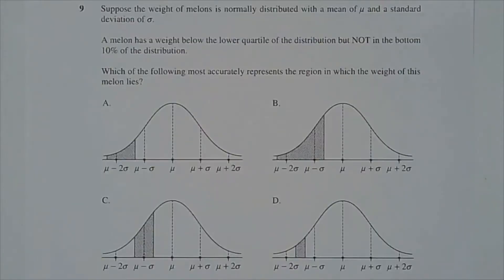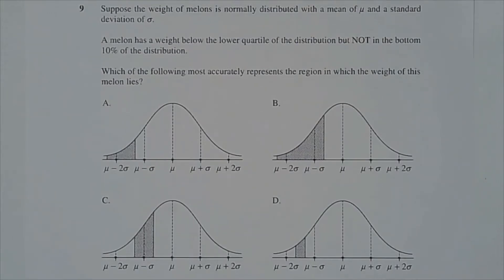Question 9. Suppose the weight of melons is normally distributed with mean mu and standard deviation sigma. A melon has a weight below the lower quartile of the distribution, but not in the bottom 10%. Which of the following most accurately represents the region in which the weight of this melon lies?